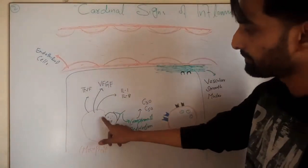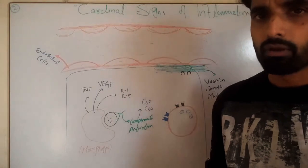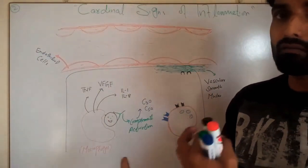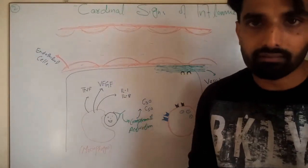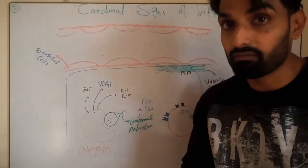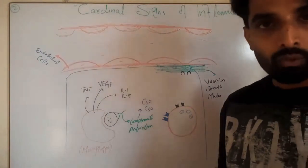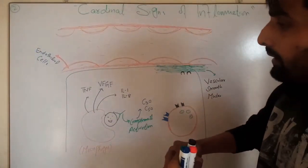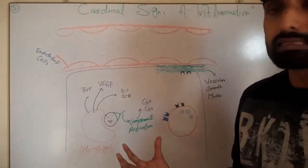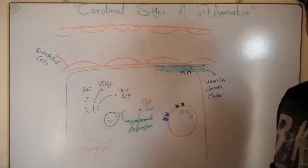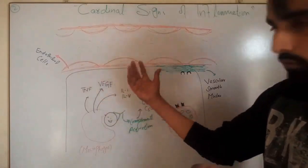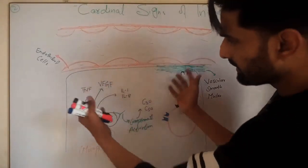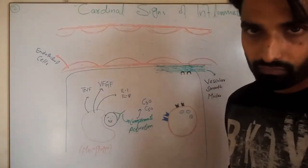When the macrophages recognize these pathogens as foreign particles — using PAMPs and PRRs, as discussed in the previous video — the macrophage will release different cytokines like tumor necrosis factor, vascular endothelial growth factor, interleukin-1, interleukin-2, and other cytokines.